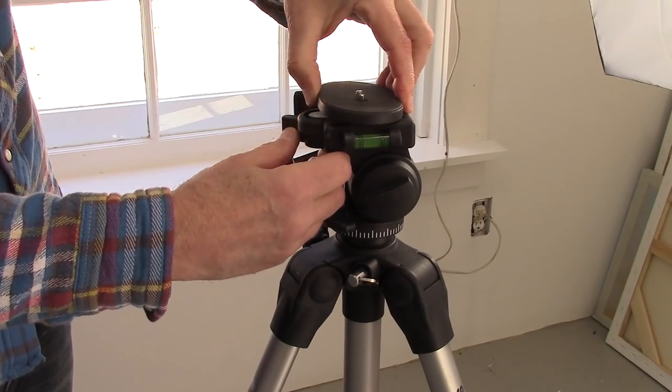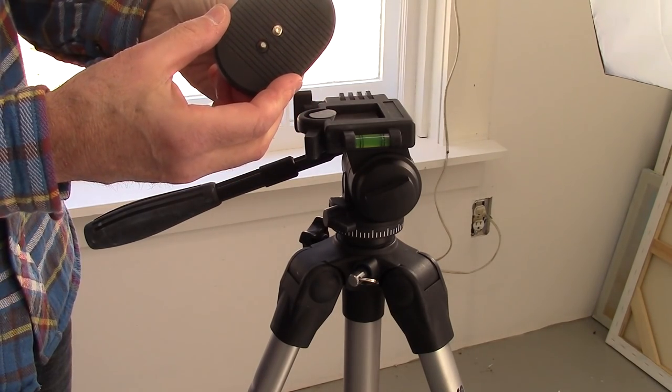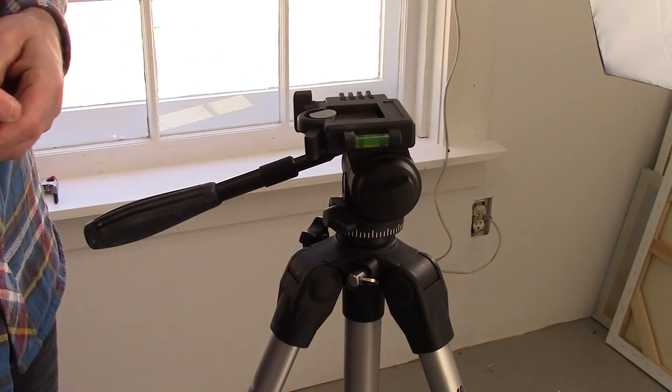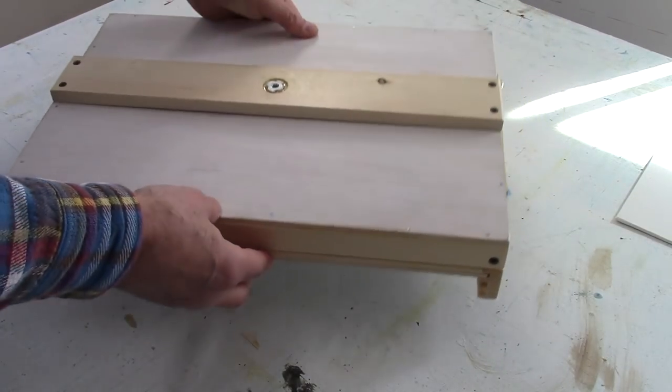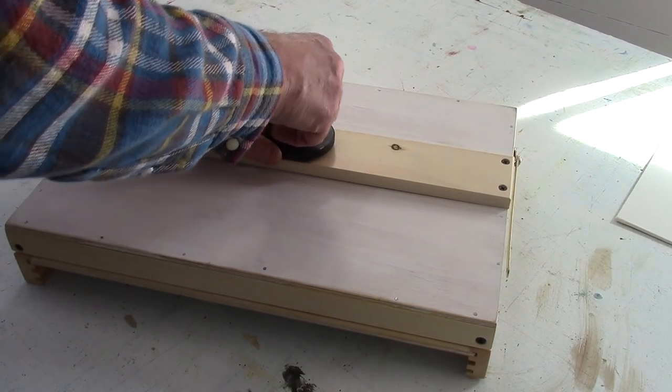The paint box is designed to mount to a standard camera tripod which has a detachable mounting base. The base is then screwed into a quarter inch by 20 T-nut which is attached to the bottom of the paint box.